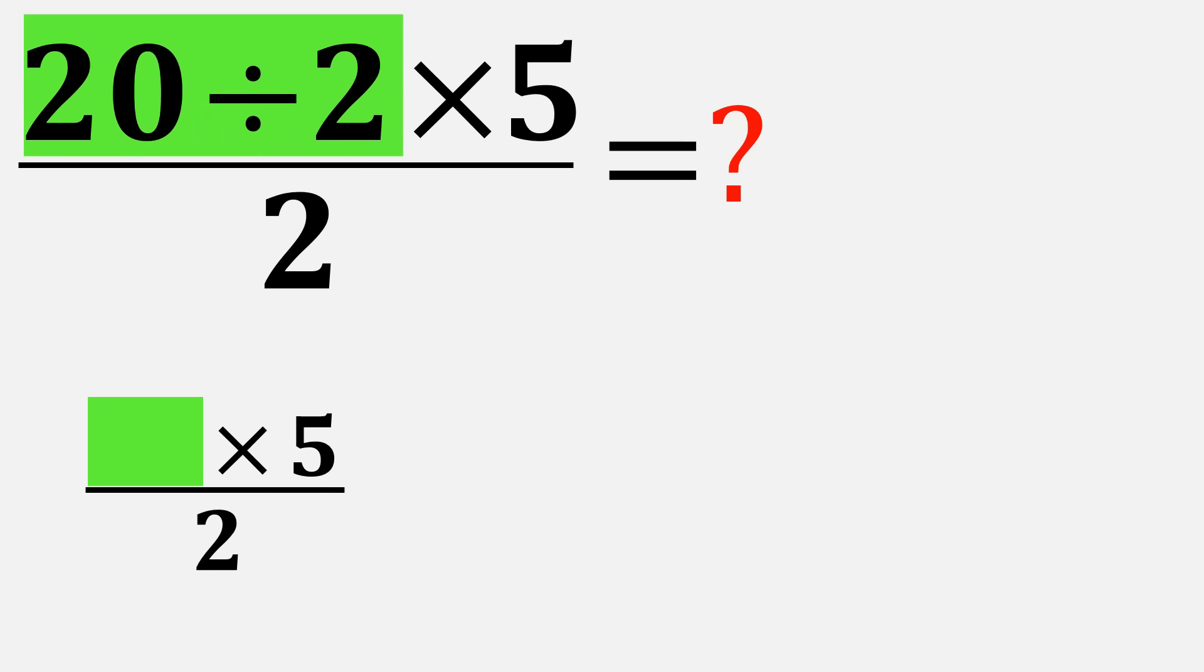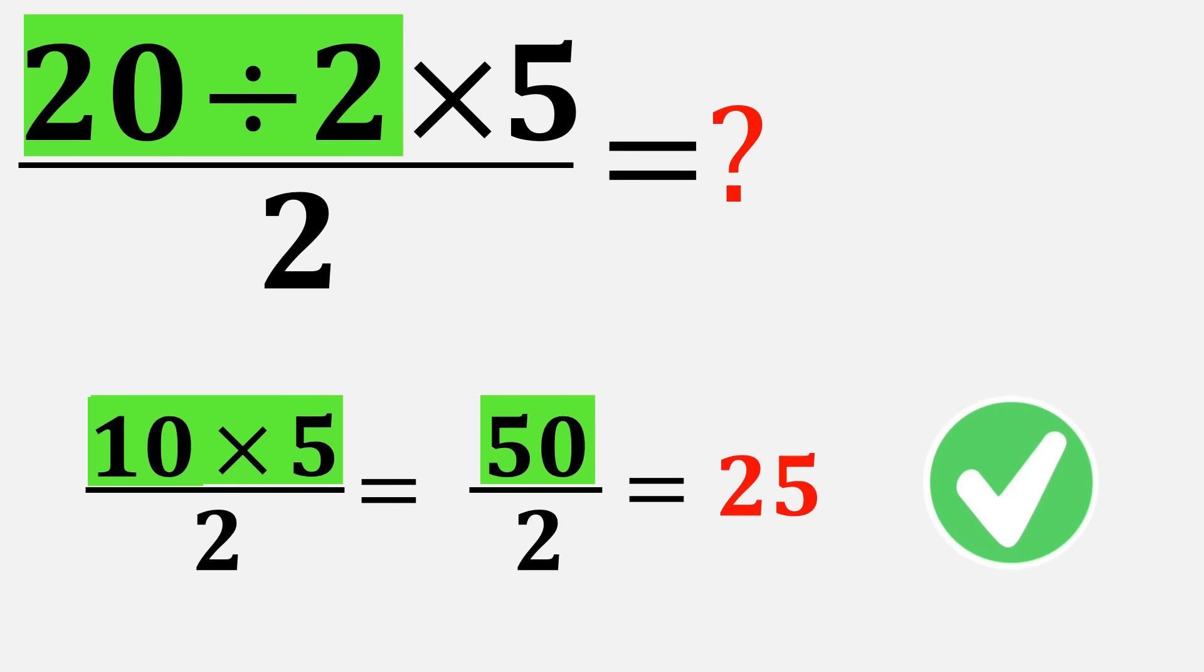So now our expression becomes 10 times 5 divided by 2. Next, still going from left to right, we do 10 times 5, which gives 50. Now we're left with 50 divided by 2, and that equals 25. So the correct final answer is 25. That's it—nothing fancy, just following the correct order, left to right, one step at a time.